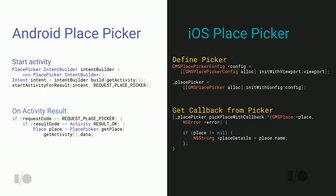On iOS it's very similar. There's a GMSPlacePickerConfig object in the SDK used to configure details about the place — for example, location around Rome. I launch a GMSPlacePicker object passing that configuration, get a callback with a GMSPlace object, and parse it for name, address, and all the other goodies.